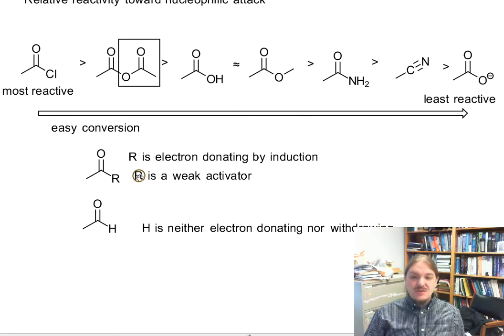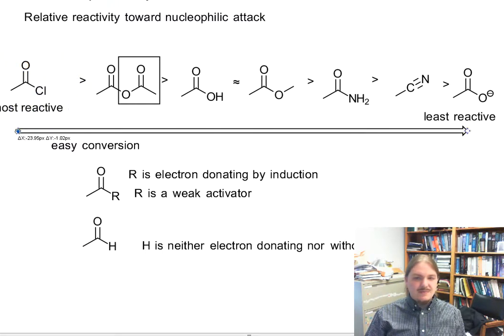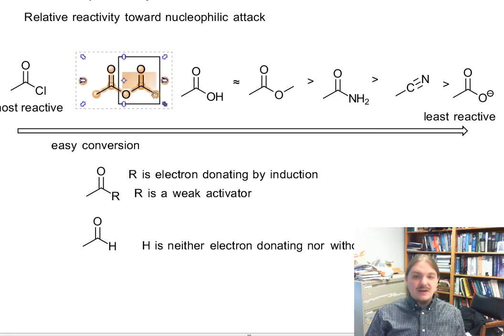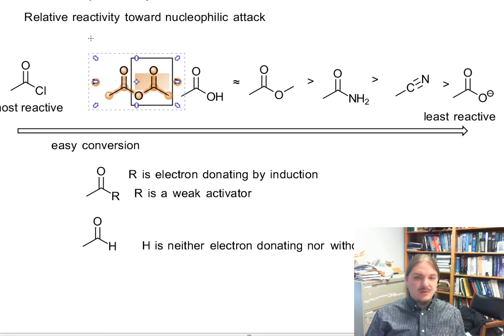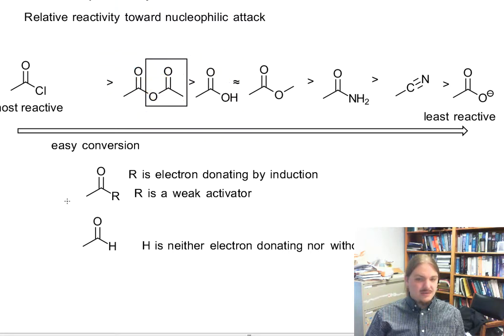We should put these compounds in terms of their reactivity relative to the other sorts of activators and deactivators. The acid chloride is most reactive because it has an electron withdrawing group on it. All of the other substituents are electron donating groups.